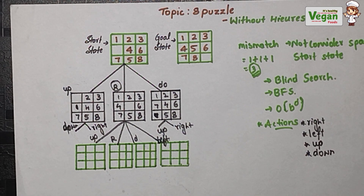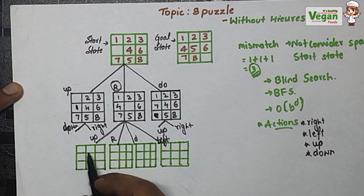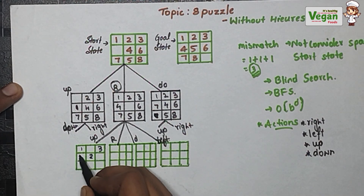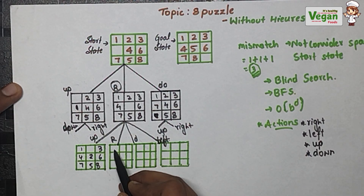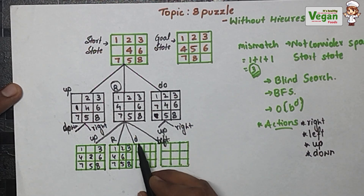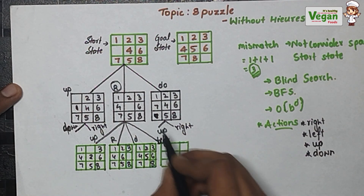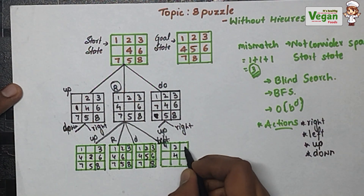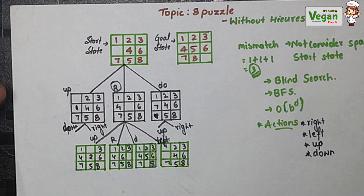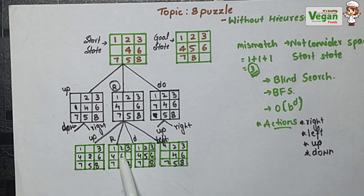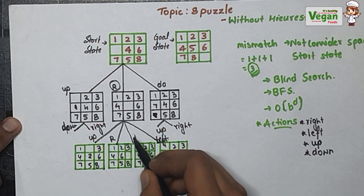The first possibility going upside: the space is replaced with 2, giving 1, 3, 4, 6, 7, 5, 8. Going right: 6 will come here, giving 1, 2, 3, 4, 7, 5, 8. Going downside: 5 will be replaced and come here, all other elements the same. Going left: 4 will be replaced, giving 1, 2, 3, 4, 6, 7, 5, 8. Comparing all with the goal state, the downside state matching 1, 2, 3, 4, 5, 6 is the best possible case.